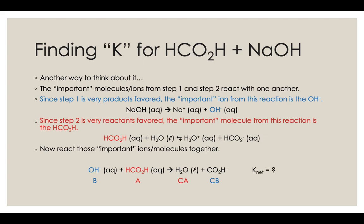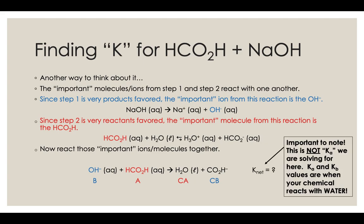When we react that hydroxide with the formic acid molecule, the formic acid donates a proton to the hydroxide to make water and leaving that formate ion behind. We could figure out the K for this reaction. Just be careful. The K for this reaction is not Ka because we don't have formic acid reacting with water here. We have formic acid reacting with hydroxide. So just be really careful with your Ks and what it's having you solve for: Ka, Kb, Kw, or just K in general for a specific reaction. So we're looking for K in general for this specific reaction.